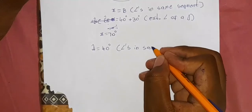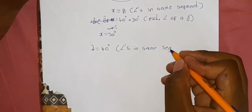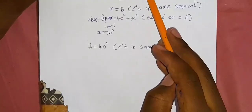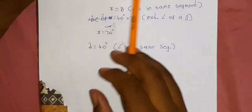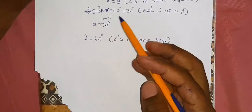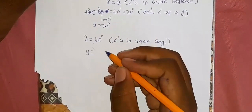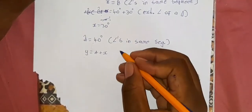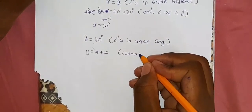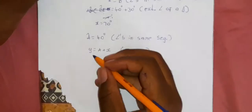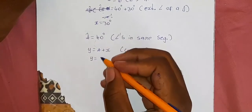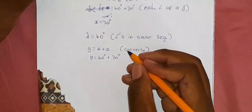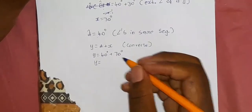Because of the converse of the angles in the same segment theorem, y is equal to angle A plus x. So y equals 40 degrees plus 70 degrees.